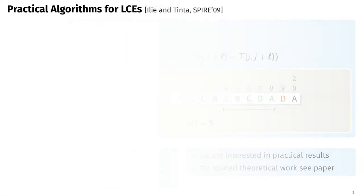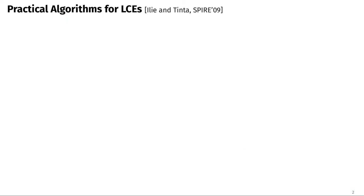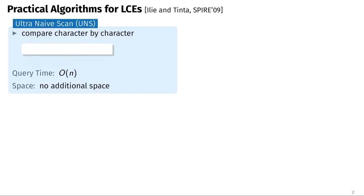Now let us look at practical algorithms and data structures for longest common extension queries. Elie and Tinta presented two approaches. The first is very naive: we simply scan the text character by character starting at the text positions received by the LCE query until we have a mismatch. This results in a query time proportional to the result of the LCE query, so the query time is O(n) in the worst case.